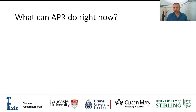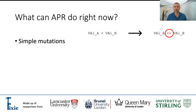I can't really talk about what APR can do without briefly listing the three types of methods that are the most popular to use. First off is simple mutations like changing operators, constants, or variables. Since a great portion of bugs in the wild can usually be fixed by simple typo-like fixes, this is what any APR tool worth its salt should be able to do.